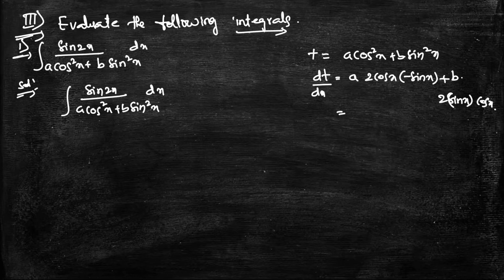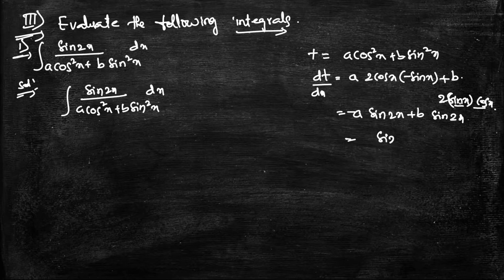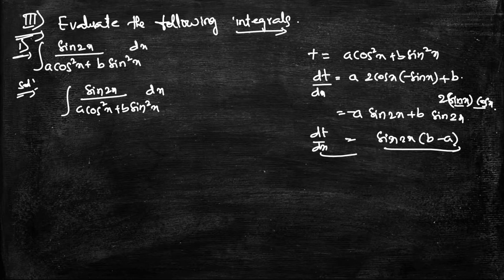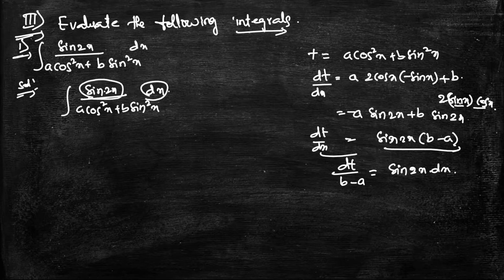So dt/dx equals: for the first term, 2sinx·cosx = sin2x, and the b term also gives sin2x. Combining, dt/dx equals (b − a)·sin2x, so rearranging: sin2x·dx = dt/(b − a), where (b − a) is a constant.